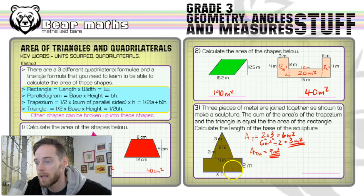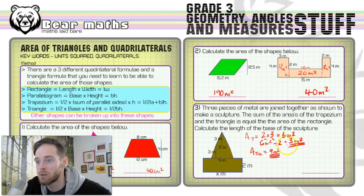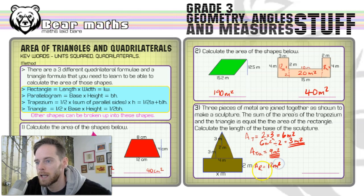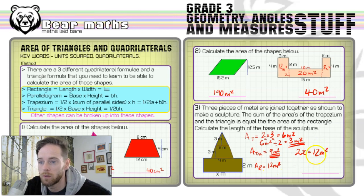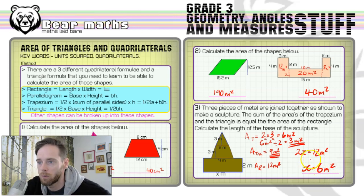The area of the rectangle equals the sum of the triangle and trapezium areas: 3 plus 9 equals 12 meters squared. To find the missing length x, we know 2 times x equals 12, so dividing both sides by 2 gives x equals 6 meters.